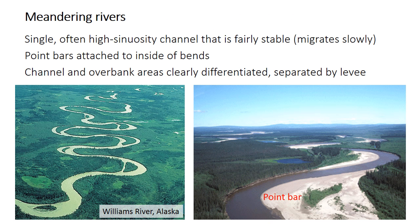The other main category of river is the meandering river, named because of its highly sinuous channel that meanders back and forth in big sweeping bends, as you can see in the photo on the left in particular. Meandering rivers predominantly have a single channel confined within stable banks. The channel does move and meander as the name suggests, but it's not nearly as unpredictable or shifty as the channels in braided rivers.